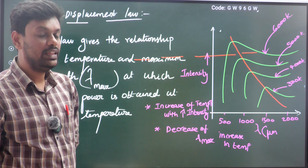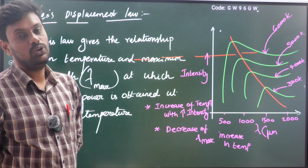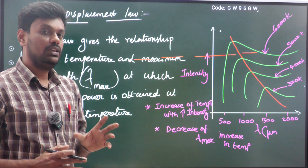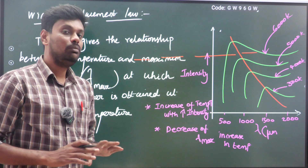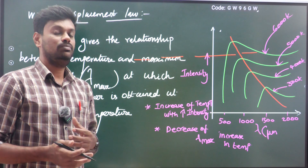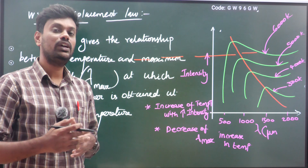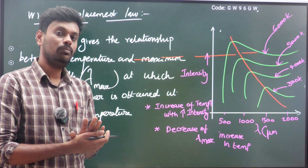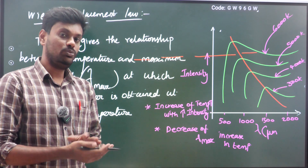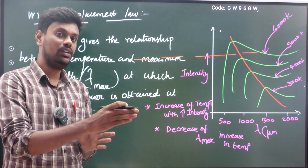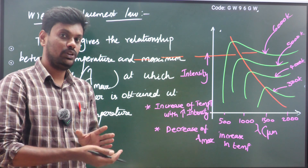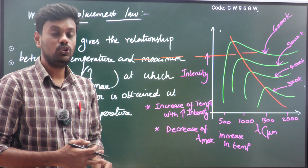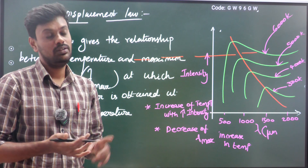Another important law in radiation is Wien's displacement law. It deals with and gives an idea about wavelength with respect to emissive power and temperature. In radiation, electromagnetic waves transfer heat without any medium, moving at some wavelength from one place to another. Wien's displacement law gives an idea about at what wavelength the emissive power is maximum, and relates that wavelength to the temperature.